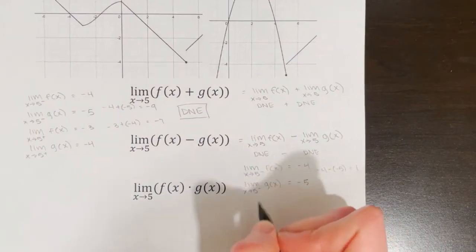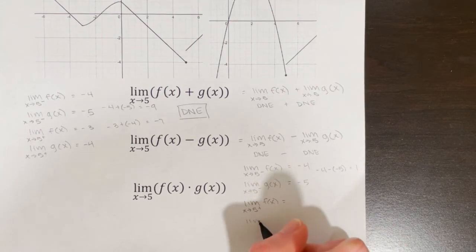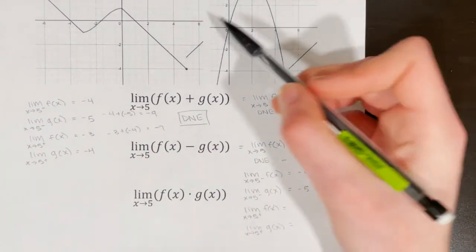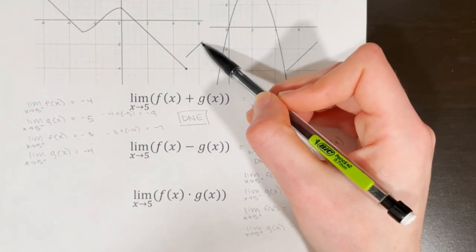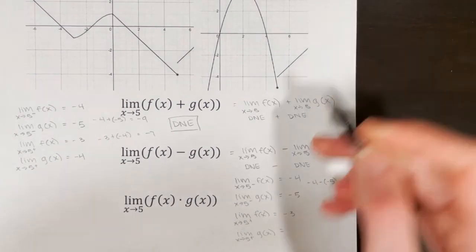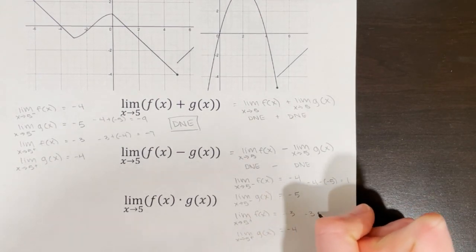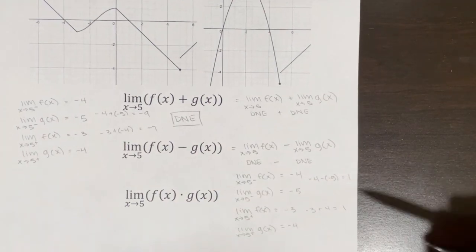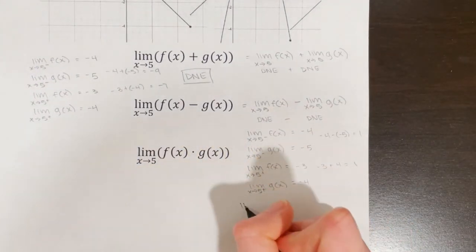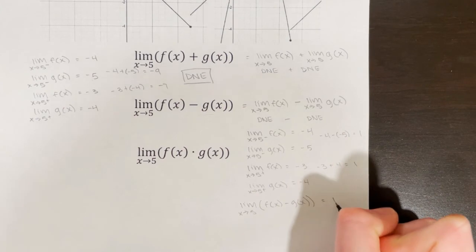Now the right-sided limits. For f(x) approaching from the right, it's negative 3. For g(x) approaching from the right, it's negative 4. Doing f(x) minus g(x): negative 3 minus negative 4 is negative 3 plus 4, which equals 1. My left-sided limit equals my right-sided limit, so the overall limit as x approaches 5 of f(x) minus g(x) is equal to 1.